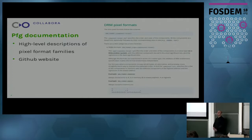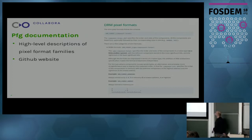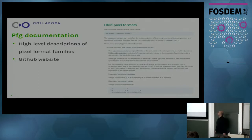The first part of the Pixel Format Guide is the documentation itself. It's a collection of documents describing the pixel format names at a high level. For example, here is the start of the webpage describing the DRM pixel format. The documentation is hosted as a GitHub website, automatically created from the repository, and it can be very useful when you want a broad overview of how to interpret pixel format names for a specific family.